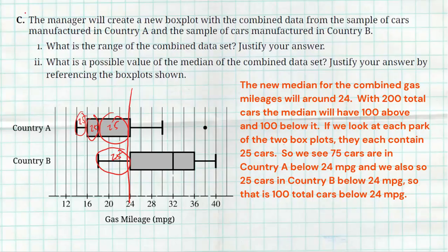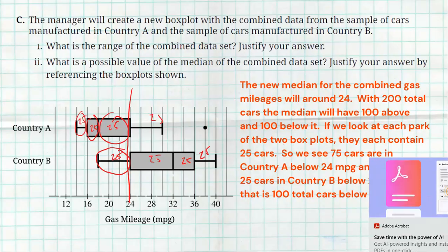So, that's going to be my median because there's going to be 100 cars below it, which means there's going to be 100 cars above it as well. So, here's another 25, 25, 25, and then 25 is going to be above Q3 for Country A. So, that value of 24 miles per gallon is going to cut the data in half with 100 cars below it and 100 cars above it.